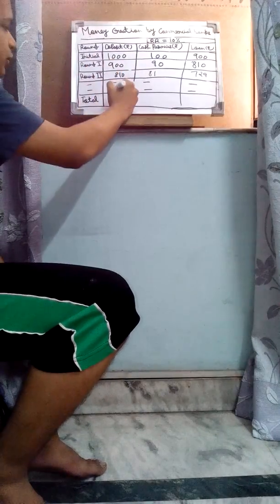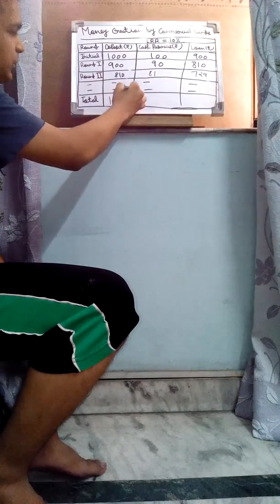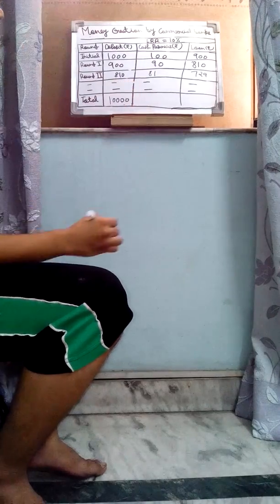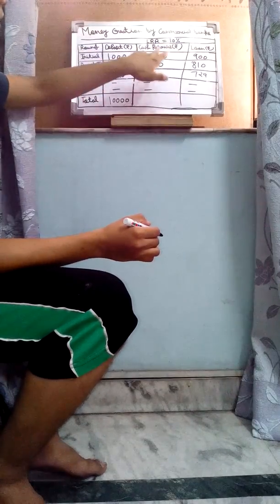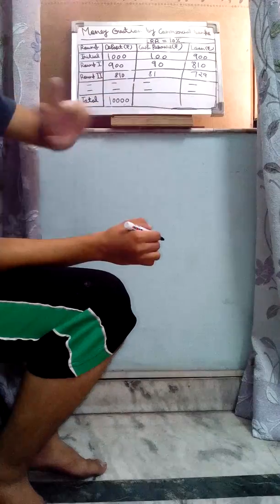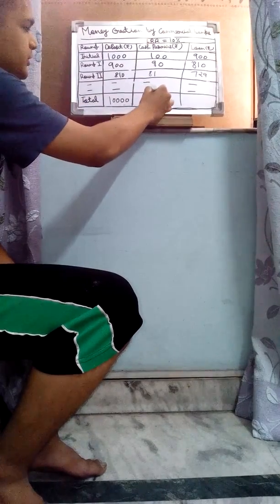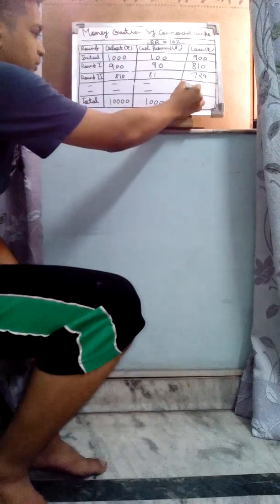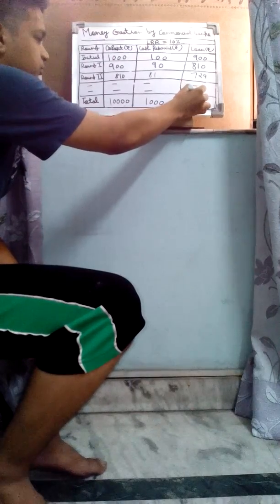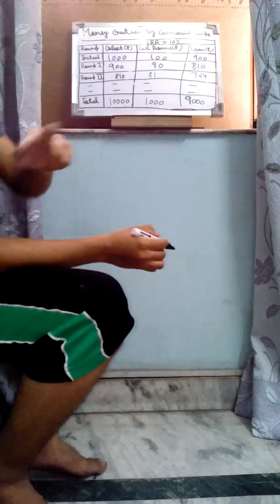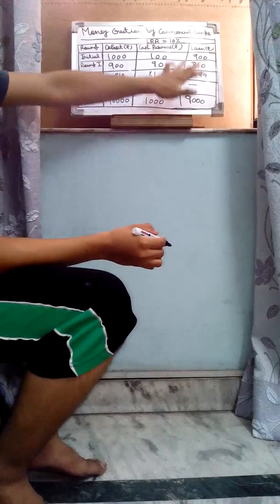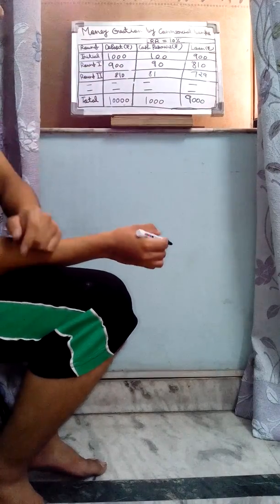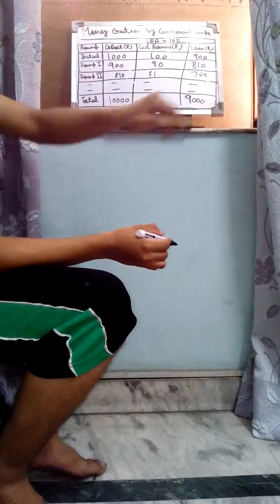This process continues, and the total deposit will be rupees 10,000. The cash reserve will be 1000 and the loan will be rupees 9,000. So if we sum up the loan and cash reserve, we will get the sum equal to rupees 10,000.